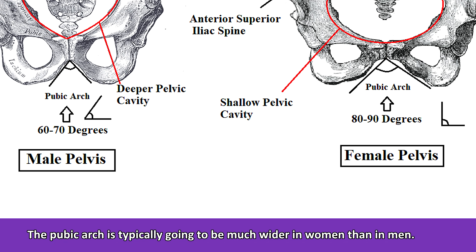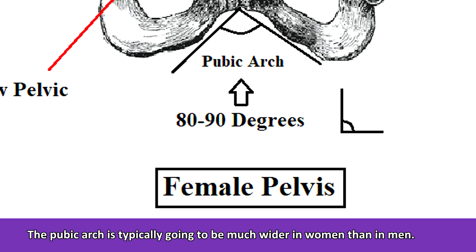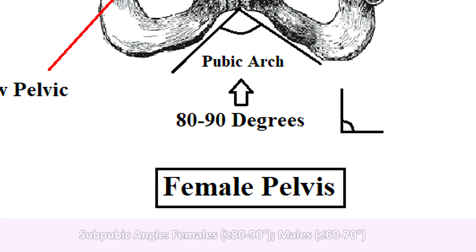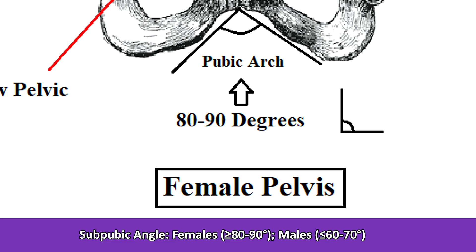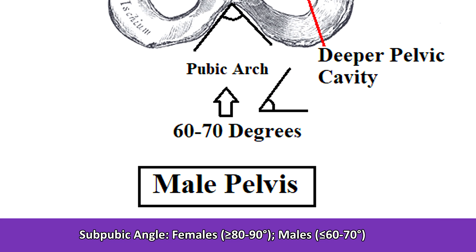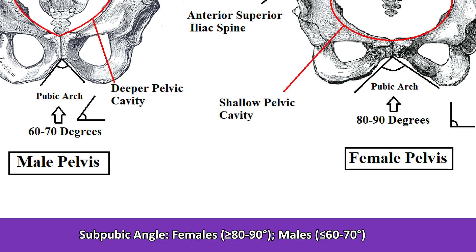Now, the angle created by this pubic arch in each pelvis is referred to as the sub-pubic angle. In women, the sub-pubic angle will generally be equal to or greater than around 80 degrees, which is more of an obtuse angle. If you think of a 90 degree angle, it's shaped kind of like the letter L — that's roughly what the sub-pubic angle is going to be. Now, in men, the pubic arch is narrower, creating a sub-pubic angle that is usually less than or equal to about 60 or 70 degrees, which is more of an acute angle — more similar to an upside down V.